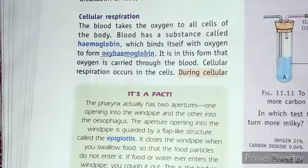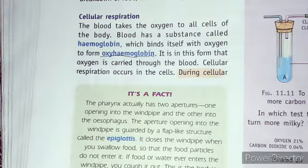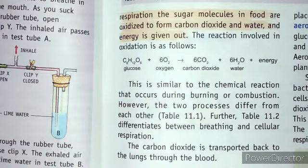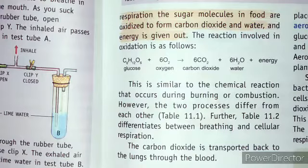This respiration occurs mainly in the mitochondria, which is a cell organelle. During this respiration, the sugar molecules in the food are oxidized — that means they get bonded with the oxygen — and afterwards this oxidized food forms carbon dioxide and water, and some heat is also released.